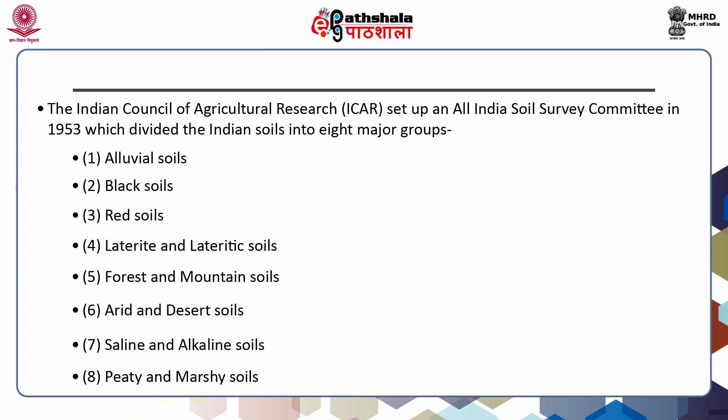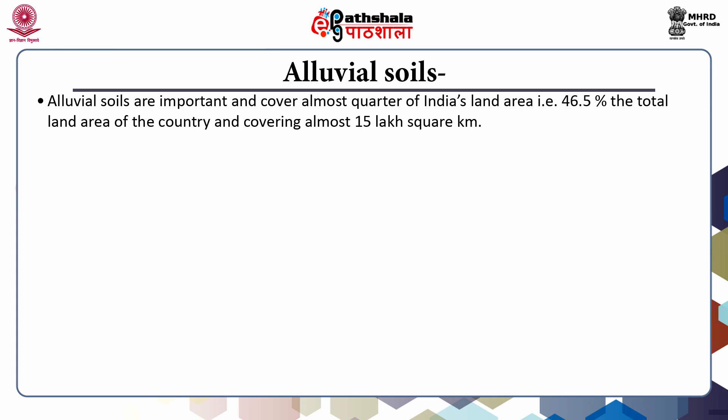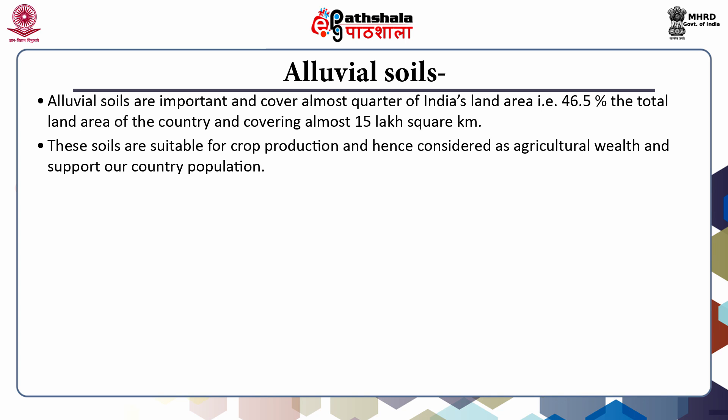This is a very logical classification of Indian soil and has gained wide acceptance. Now, a brief account of all these eight soils. First, we will take alluvial soil. Alluvial soils are by far the largest and the most important soil group of India, covering about 15 lakh square kilometers or about 45.6 percent of the total land area of the country. These soils contribute the largest share of our agricultural wealth and support the bulk of India's population.